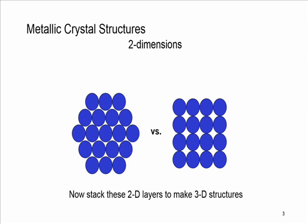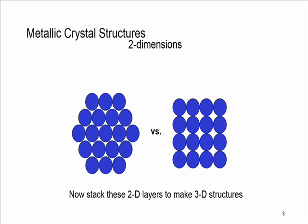Materials like metals have a crystal structure which is an organized array of atoms, similar to what we can see on the left and right side here. We want to see how we can stack these types of atom structures on top of each other so that we minimize empty space. We will talk about how we can stack these 2D layers to make 3D structures.